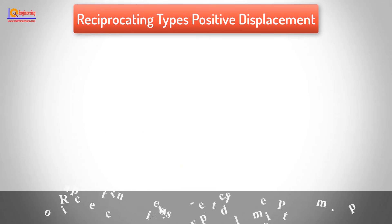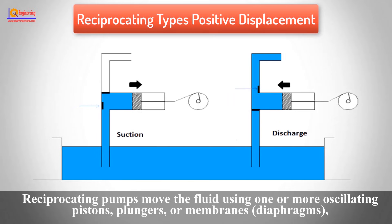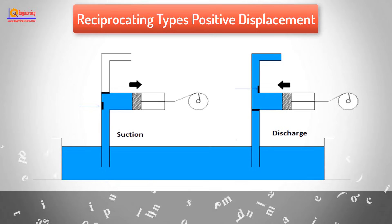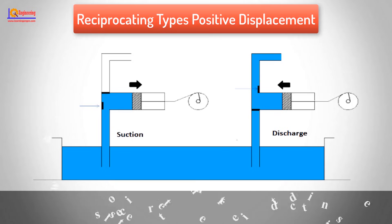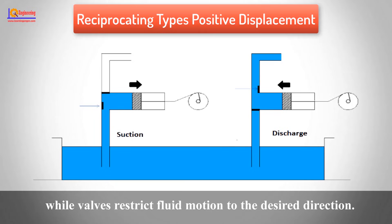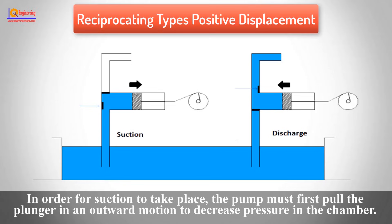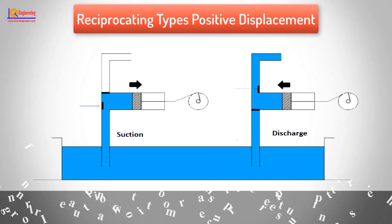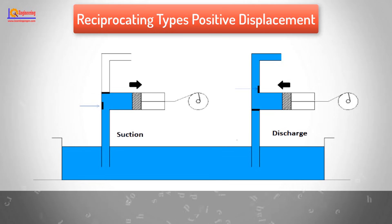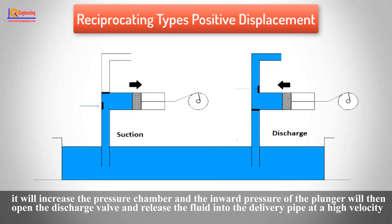Reciprocating Type Positive Displacement Pumps move the fluid using one or more oscillating pistons, plungers, or membranes, while valves restrict fluid motion to the desired direction. In order for suction to take place, the pump must first pull the plunger in an outward motion to decrease pressure in the chamber. Once the plunger pushes back, it increases the pressure in the chamber and the inward pressure of the plunger opens the discharge valve, releasing the fluid into the delivery pipe at high velocity.